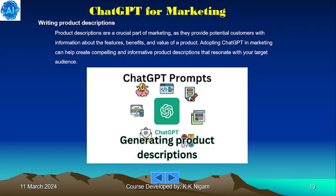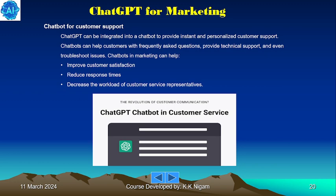Writing product descriptions: product descriptions are a crucial part of marketing as they provide potential customers with information about the features, benefits, and value of a product. Adopting ChatGPT in marketing can help create compelling and informative product descriptions that resonate with your target audience. ChatGPT can also be integrated into chatbots to provide instant and personalized customer support — chatbots can handle frequently asked questions, provide technical support, troubleshoot issues, improve customer satisfaction, reduce response times, and reduce the workload of customer service representatives.